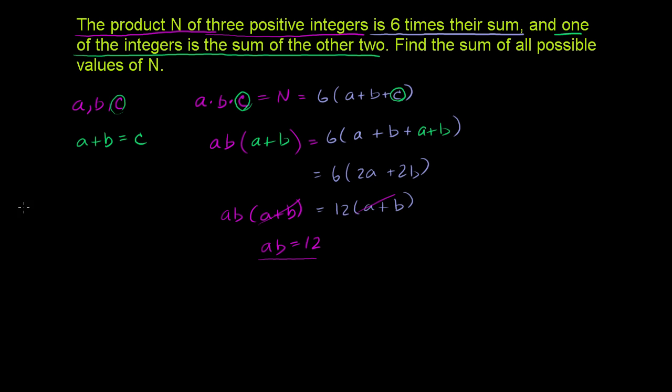Let's try them out. So let me write some columns here. Let's say a, b, c. And then we care about their product. So if a is 1, b is going to be 12. c is the sum of those two, so c is going to be 13.